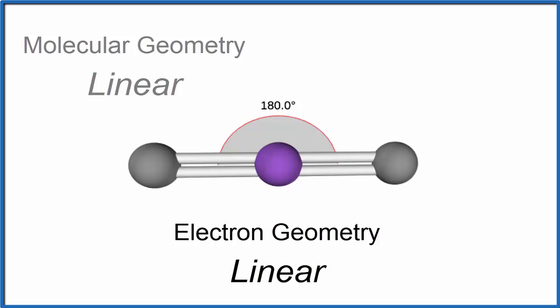And since we don't have any lone pairs on the central atom, that's the electron geometry for CO2 as well.